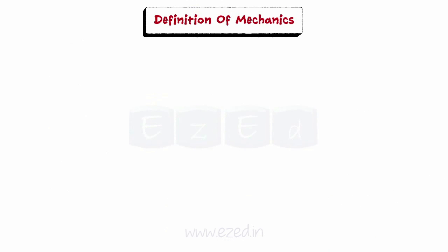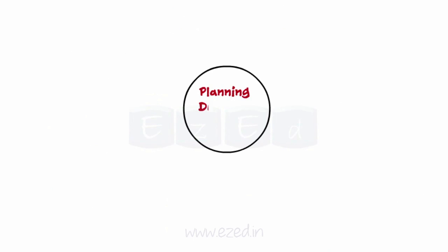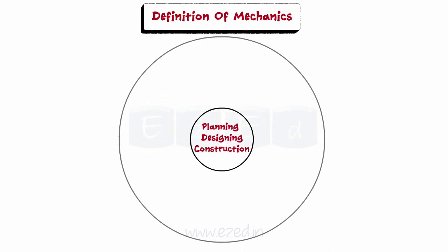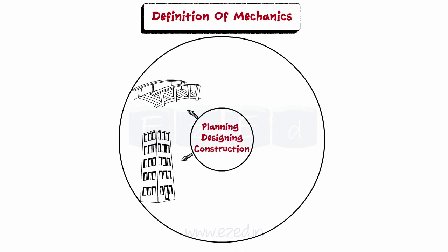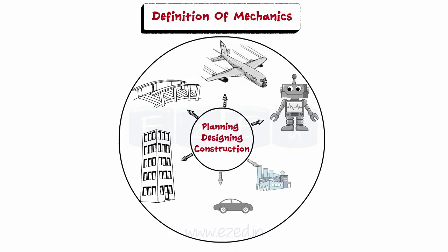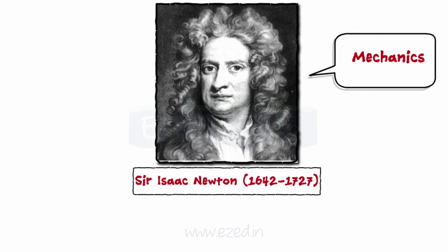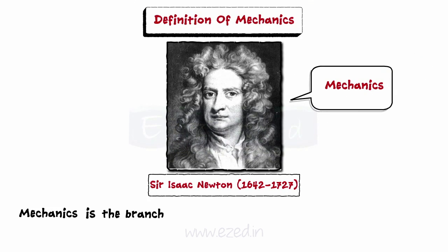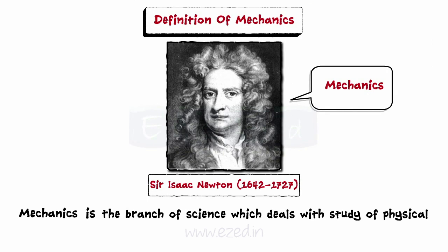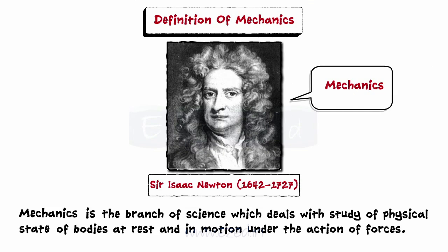Definition of mechanics: In today's world, the planning, designing, and construction of different types of structures and machines like bridges, multi-storied buildings, aircrafts, robots, etc. is done by engineers using the principles of mechanics. The word mechanics was coined by Sir Isaac Newton. He defined mechanics as the branch of science which deals with the study of physical state of bodies at rest and in motion under the action of forces.